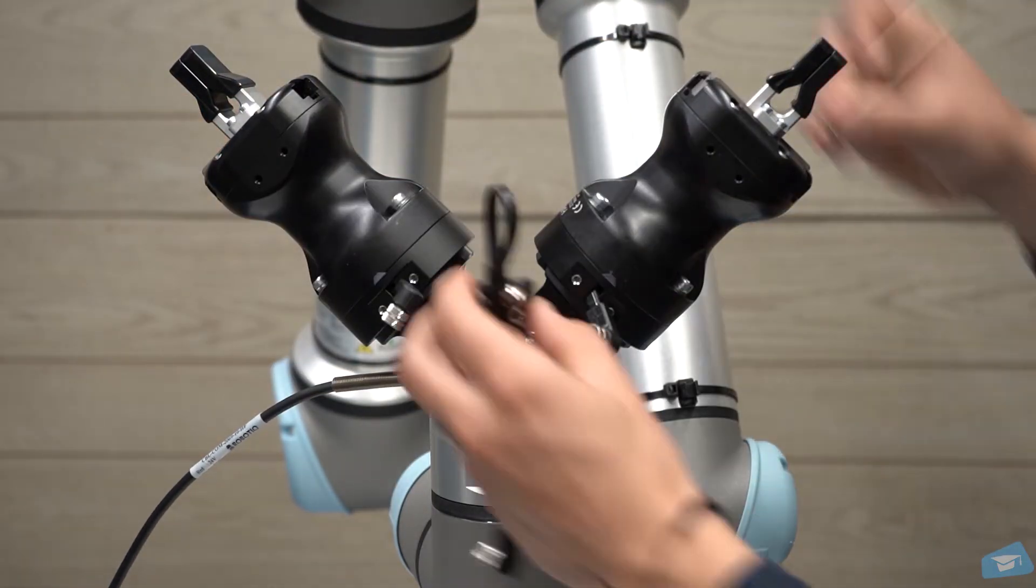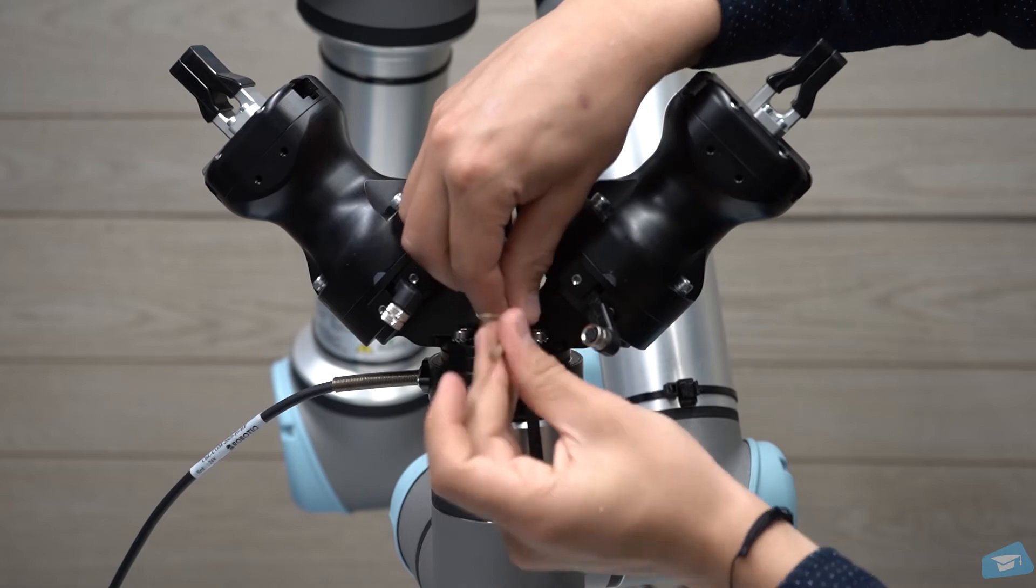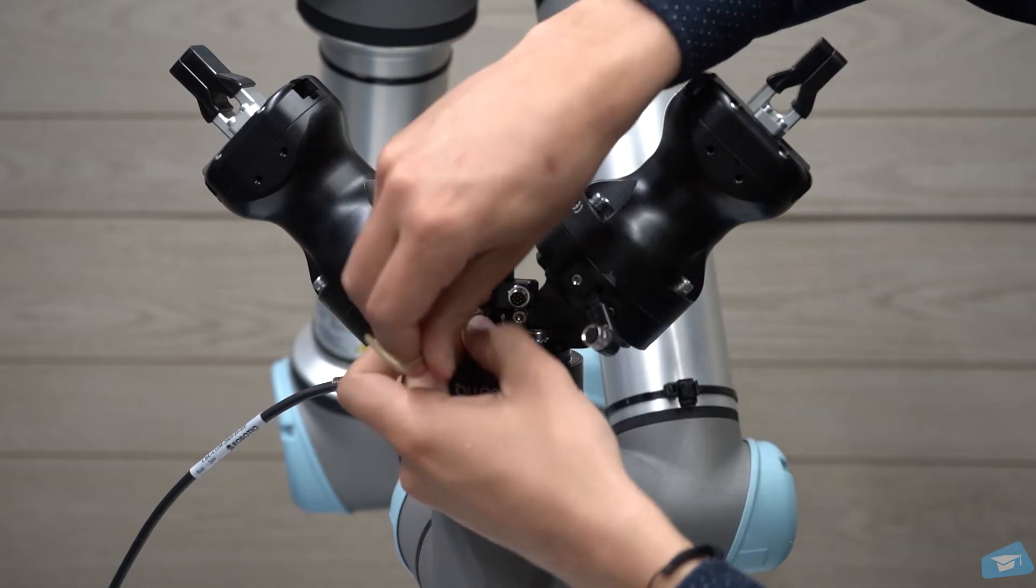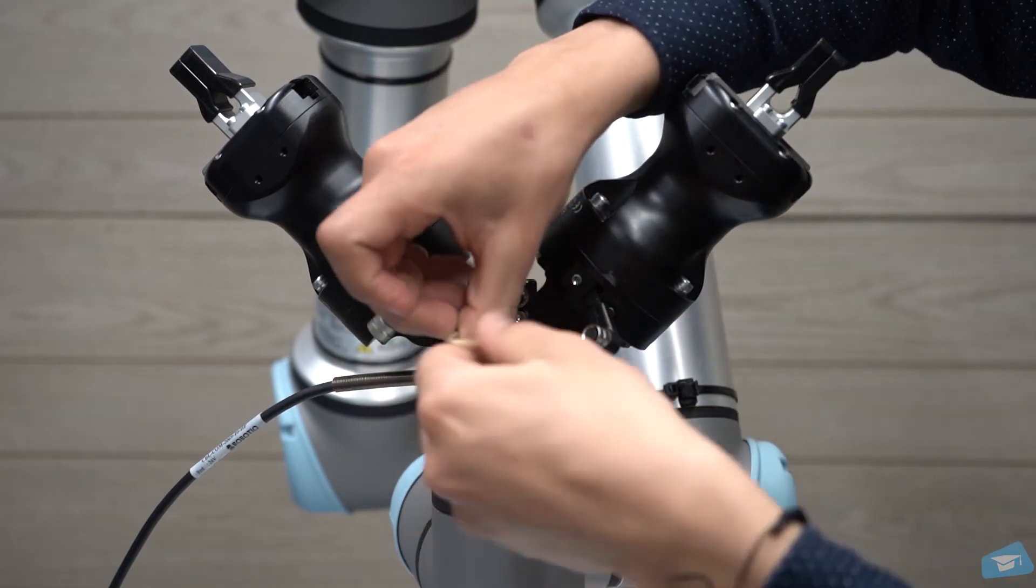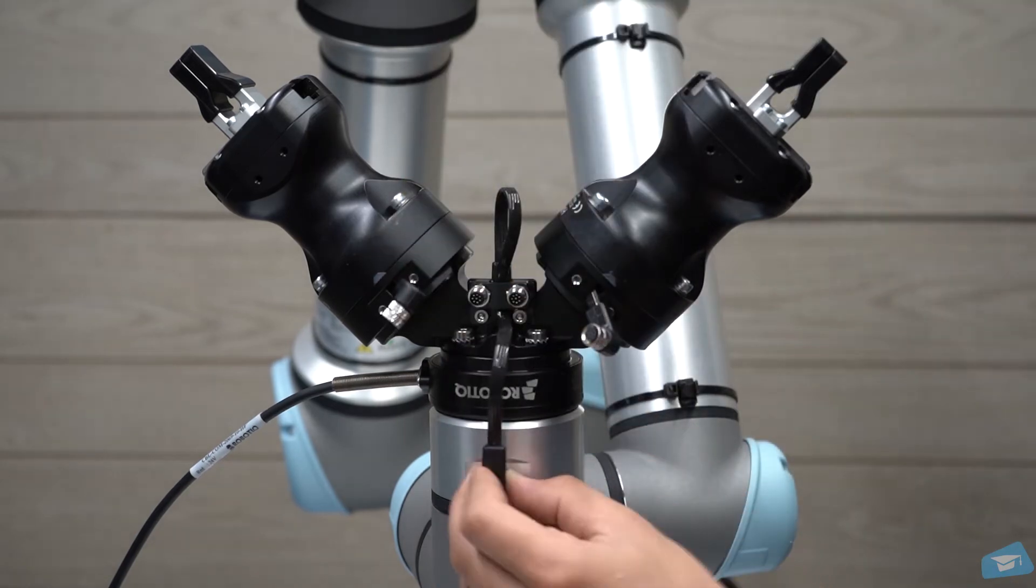Secure the M8 splitter with two screws and their lock washers. Connect the M8 splitter onto the robot wrist.